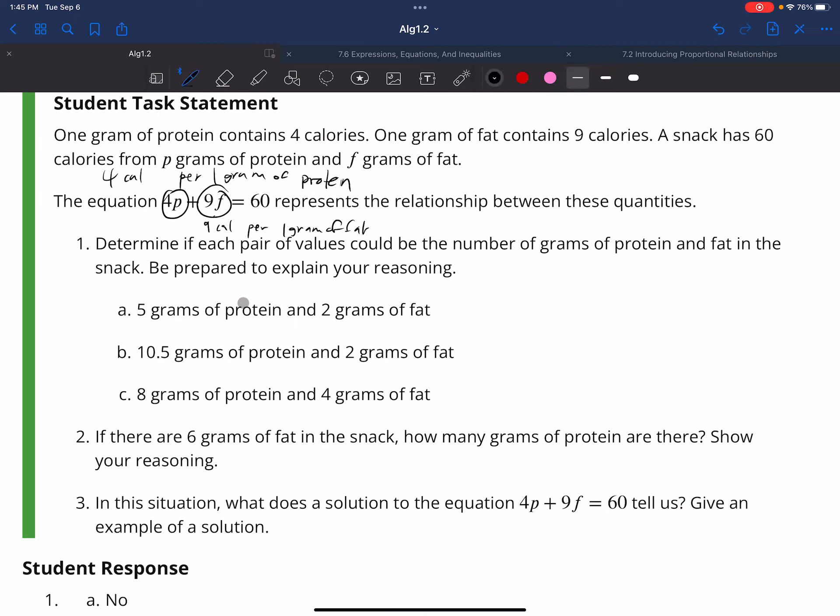So let's just say if this works here. I got 5 grams of protein and 2 grams of fat. So 4P, so it's 5 grams of protein, plus 9F, which is 2 grams of fat, is equal to 60. Well, that's going to equal 20 plus 18 is equal to 60. This obviously does not equal each other, so this is not a solution.